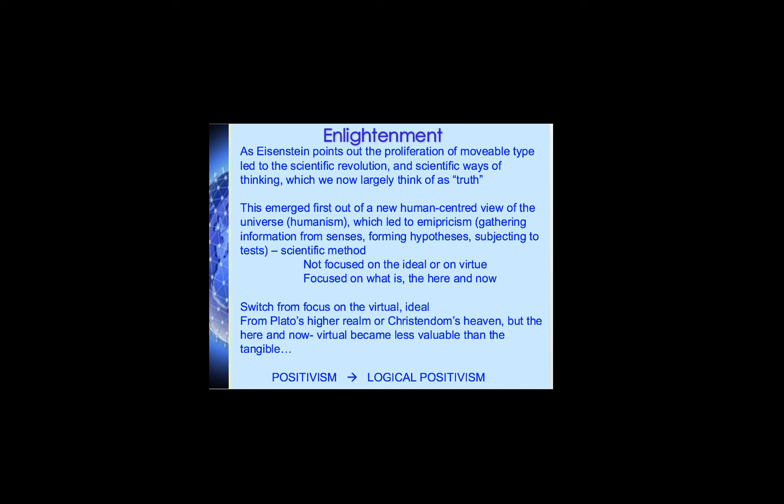This different way of thinking — that the scientific way of accessing real truth and the real truth is in the here and now, not in the virtual ideal sphere of the heavenlies — emerged first out of a new human-centered view of the universe called humanism, which led to empiricism: the practice of gathering information from your senses, forming hypotheses, and subjecting them to tests as we do in the scientific method. That's where we get the description of empirical truth.